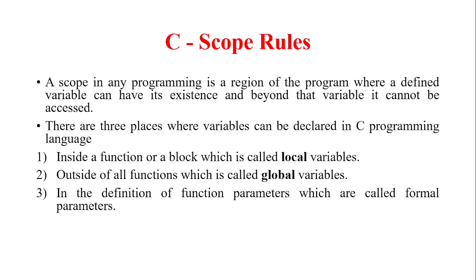There are three places where variables can be declared in C programming language. So normally we will be defining the variables in the main and then in your functions. Inside the function or a block which is called local variables. Outside of all the functions which is called global variables. In the definition of function parameters which are called formal parameters.